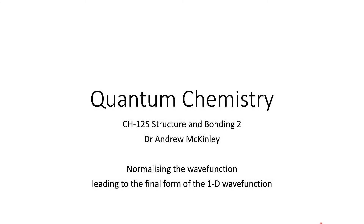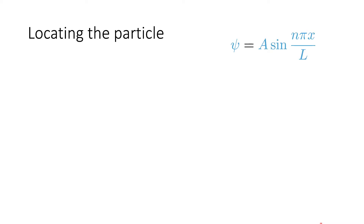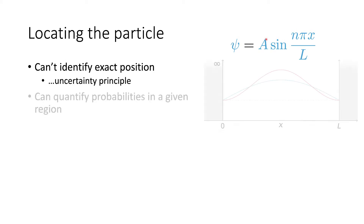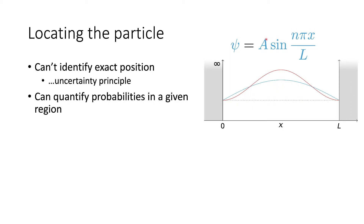In this video, I want to give an overview of how we normalize a wave function, because it's important that we're able to do it. We came up in the last video with this form of the wave function, where we have our normalization constant A. We haven't done anything about finding that value yet. We said that we can identify the probability of finding the particle in a given space — we can't find an exact position because of the uncertainty principle, but we can quantify the probabilities in a given region of space. But we first need to find this normalization constant.